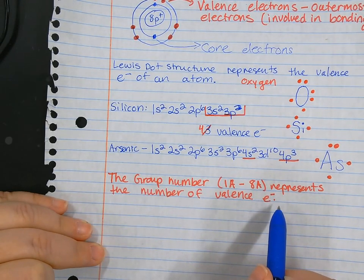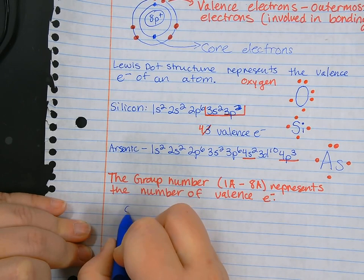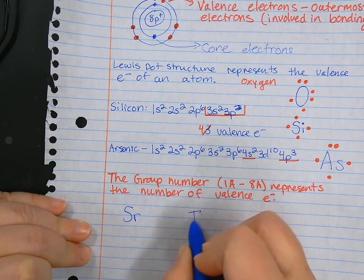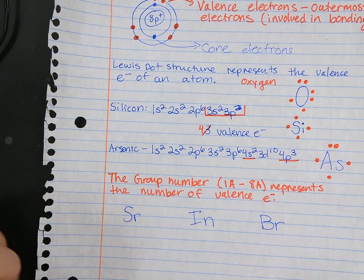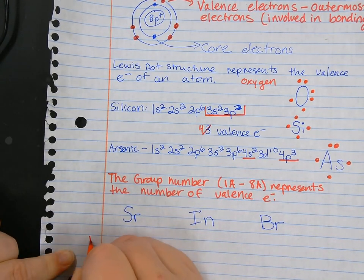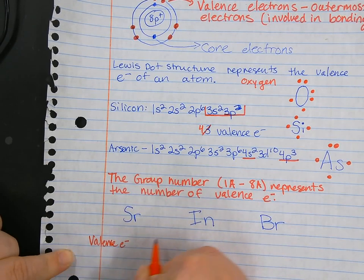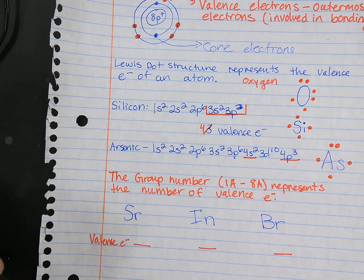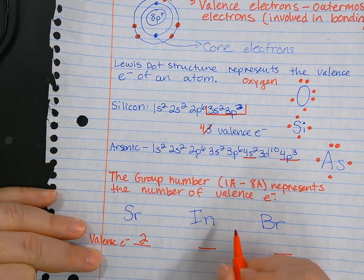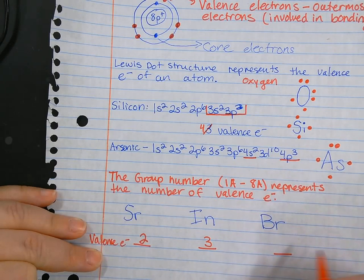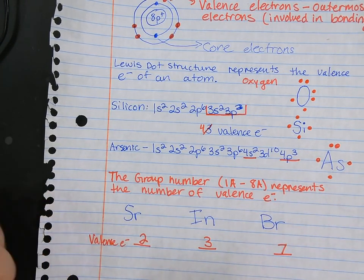Let's take a look at a few different elements just to practice this. We're going to look at strontium, indium, and bromine. Take a minute and look up their number of valence electrons and just record that underneath. You should have found that strontium was in group 2A, so it has two. Indium was in group 3A, so it has three. And bromine is in group 7A, so it has seven valence electrons.